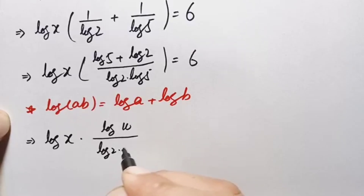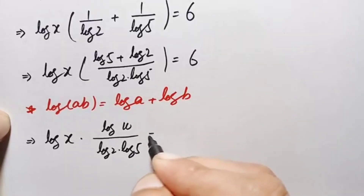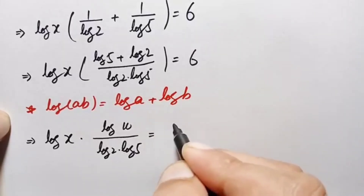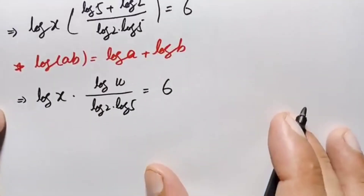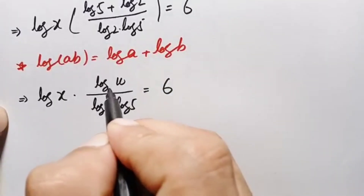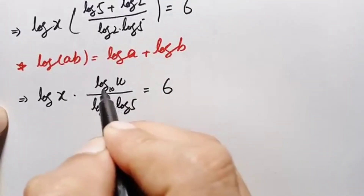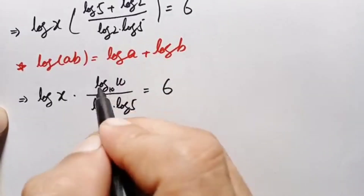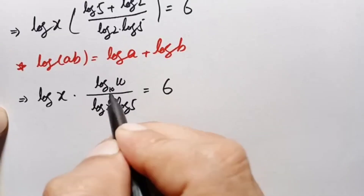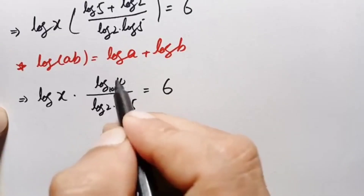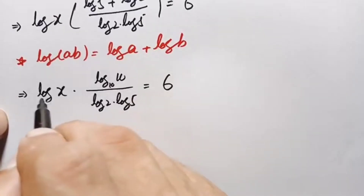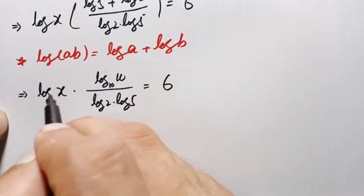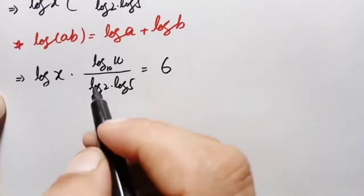So the expression becomes log of x times log of 10 divided by log of 2 times log of 5, equal to 6. Since log of 10 with base 10 equals 1, we replace log of 10 with 1, giving log of x divided by (log of 2 times log of 5) equals 6.